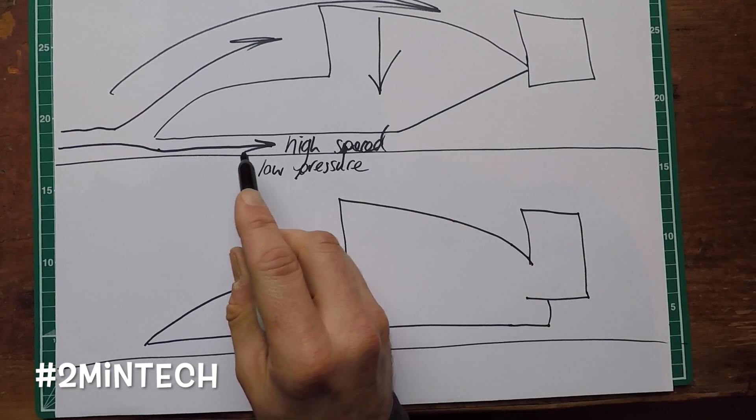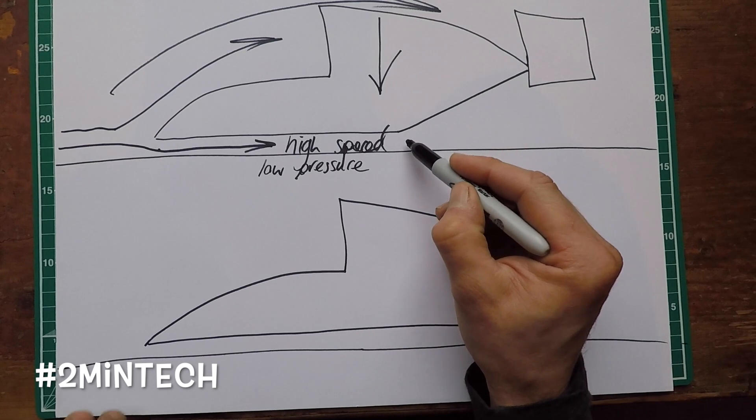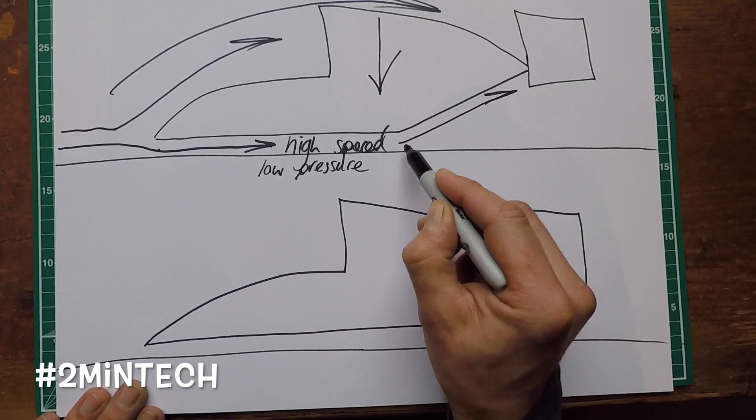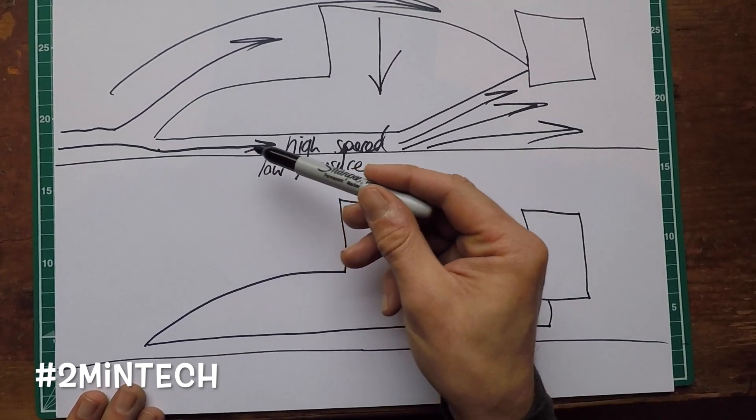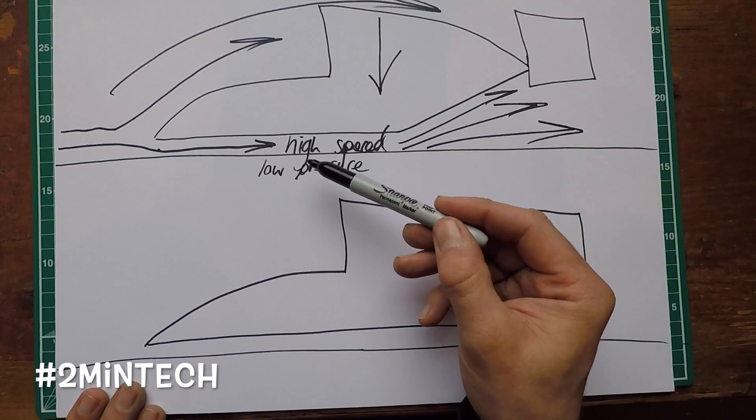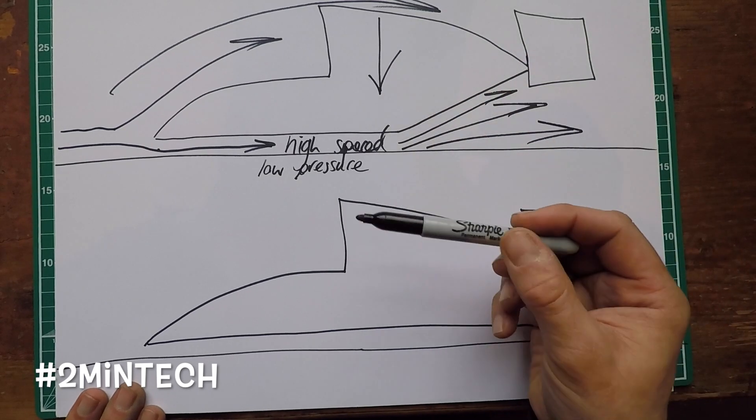Now the diffuser on the back takes this high speed low pressure air and starts to diffuse it out from beneath that narrow channel out into this big expansion gap, therefore dragging the high speed airflow through, increasing that vacuum, pulling the car down to the race track.